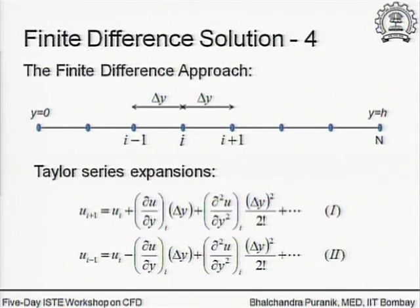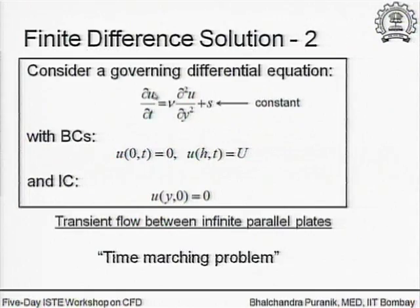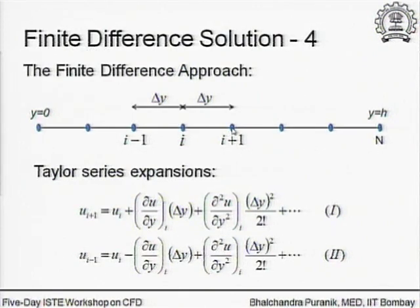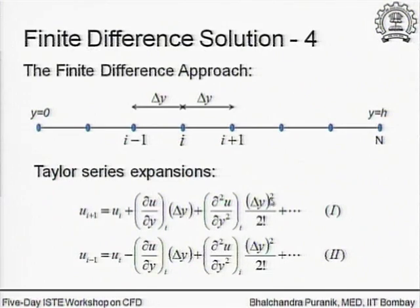The finite difference approach involves utilizing the Taylor series expansion to replace the partial derivatives with respect to time and space using corresponding algebraic expressions. I consider one general interior node point i, with neighbors i minus 1 and i plus 1. I express u at the i plus first node in terms of its value at the ith node using the standard Taylor series expansion, including du/dy at the ith node times delta y, plus d²u/dy² at the ith node times the second term, and so on.